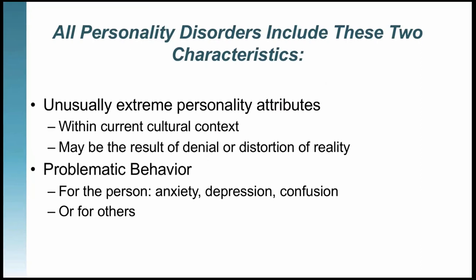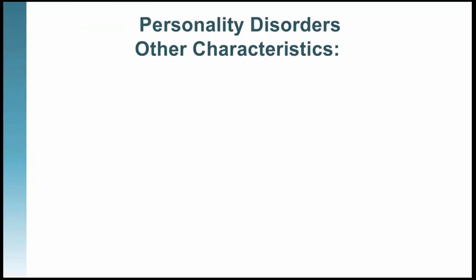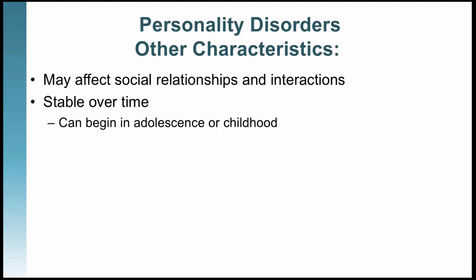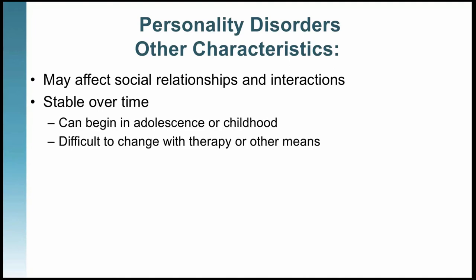There are three other characteristics that can also be true about personality disorders. One is that they may affect social relationships and interactions. They are stable over time — they can begin in childhood or adolescence and usually persist throughout adulthood. Personality disorders are difficult to change even with therapy. Some, like antisocial personality disorder, have almost no effective treatment, while others, like borderline personality disorder, have a specific therapy that was developed and can be very effective.